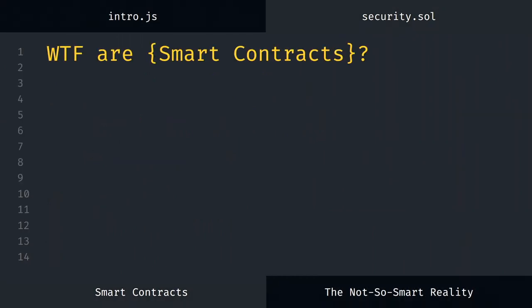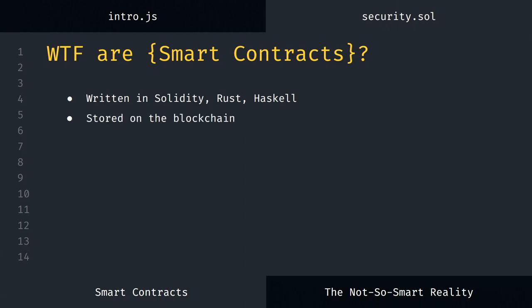So first of all, you're probably going to ask yourself, if you haven't already worked in this sector, what the heck are smart contracts? That's a pretty new phenomenon in the field of computer science. Smart contracts have their own programming languages like Solidity, but they can also be written in normal programming languages like Rust or Haskell. The cool thing is you compile the code and instead of having it on your PC in virtual memory, you store it on the blockchain.